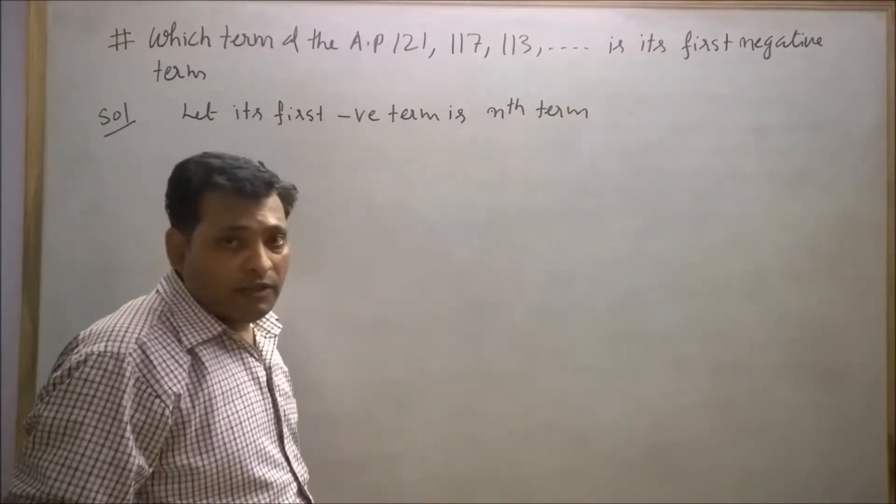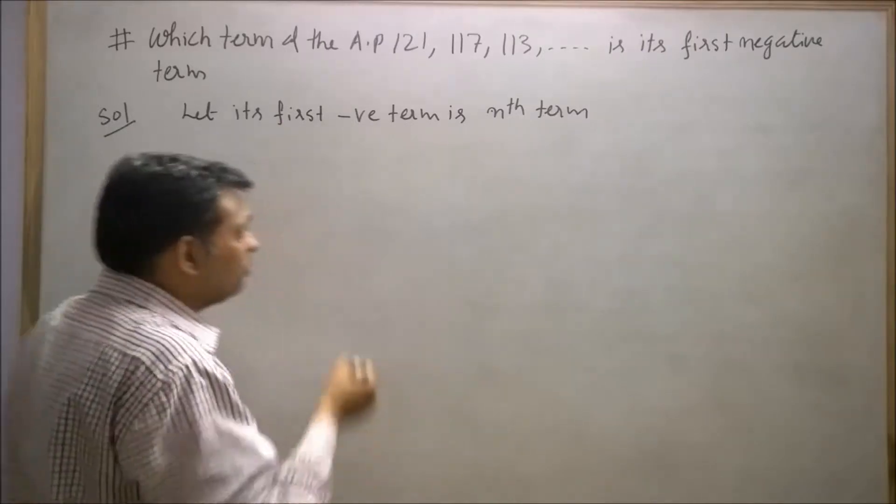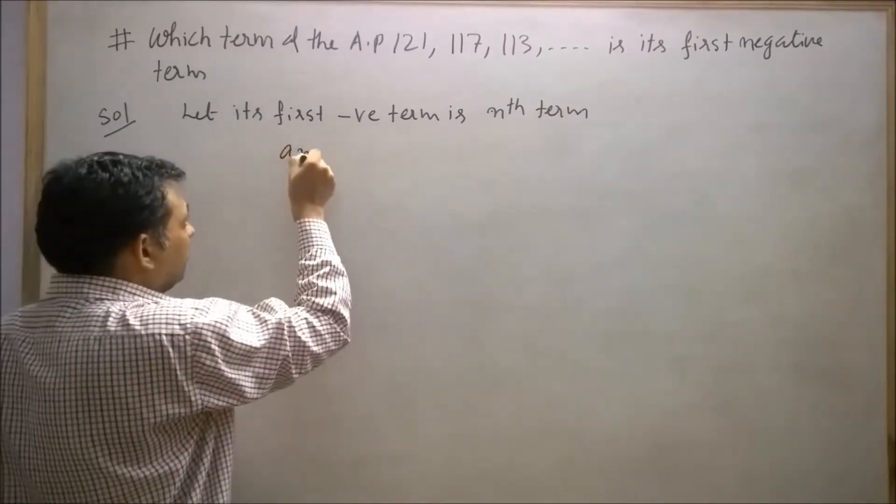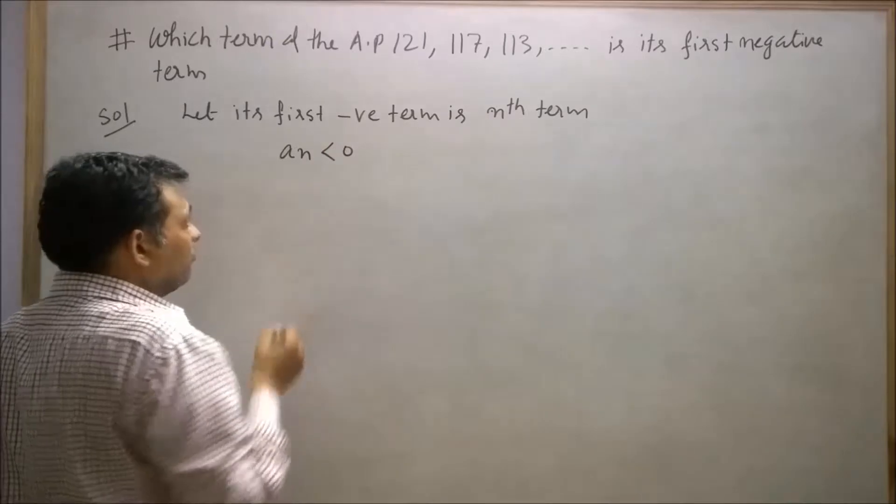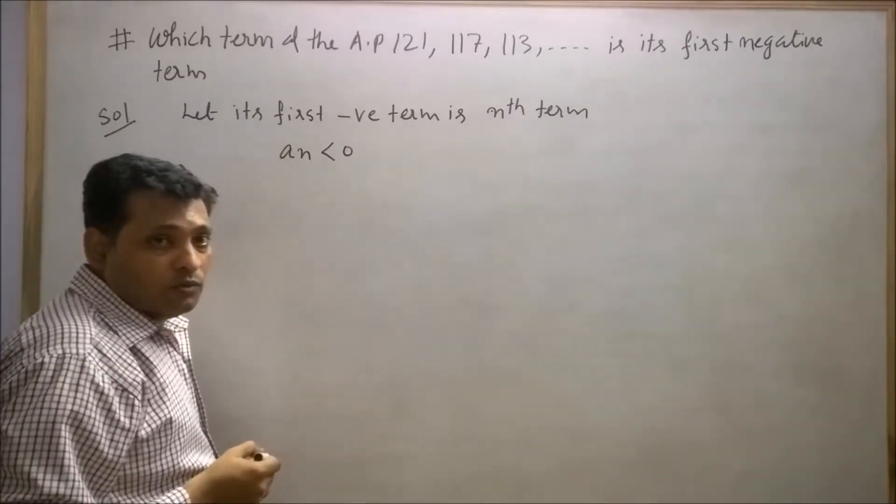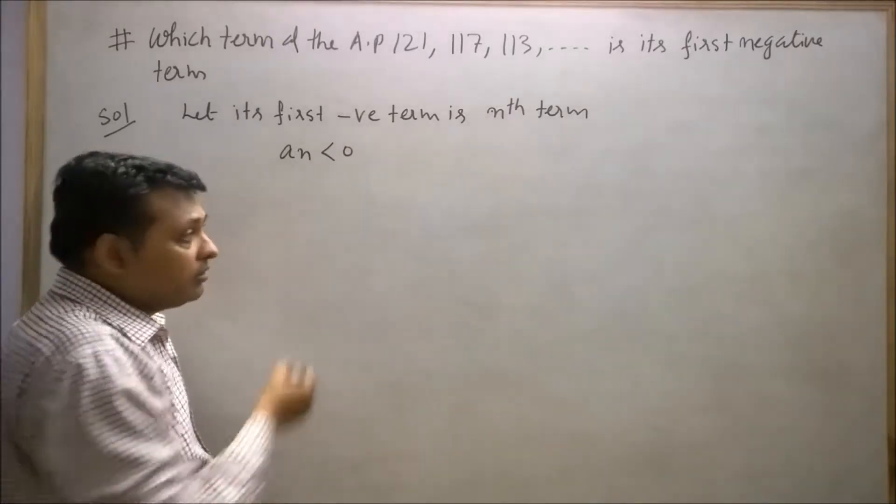The value of the nth term will be less than 0. So AN < 0. We know that AN = A + (N-1)D.